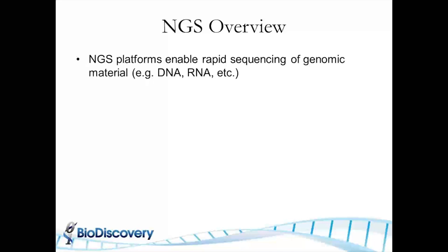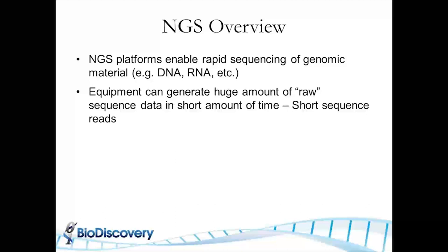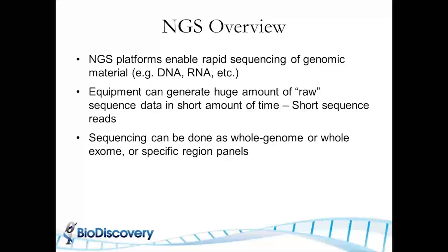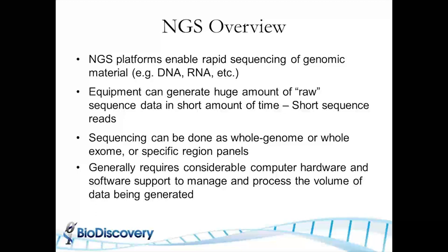I want to start with giving an overview of this technology. As most of you are quite familiar with it, the NGS platforms enable you to do rapid sequencing of various genomic materials like DNA or RNA. This equipment generates quite a large volume of raw sequence data in the form of short sequence reads. Sequencing can be done either on whole genome or whole exome to reduce the cost, or even on specific region panels, gene panels.